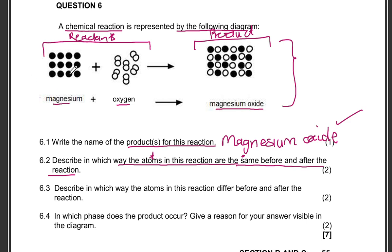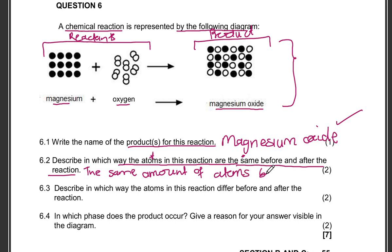If we look at magnesium, for example, you are having three, six, nine, twelve atoms on the reactant side. At the end of the reaction you're still having twelve — three, six, nine, twelve. Same with oxygen: two, four, six, eight, ten, twelve — two, four, six, eight, ten, twelve. We are having the same amount of atoms before and after the reaction.